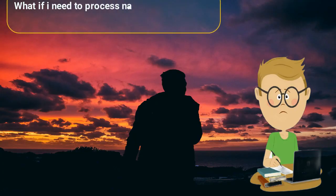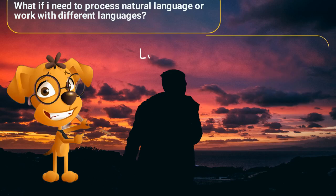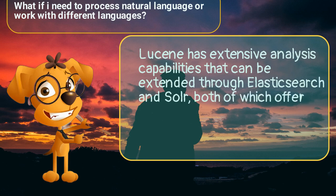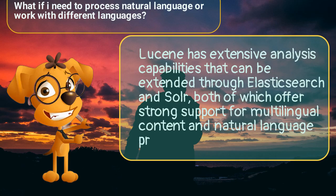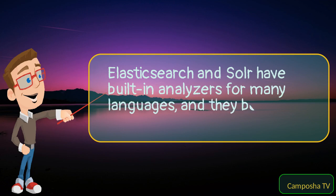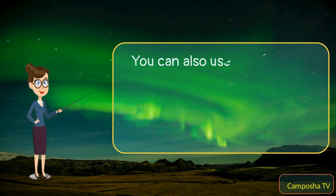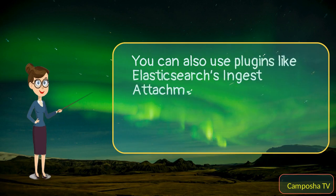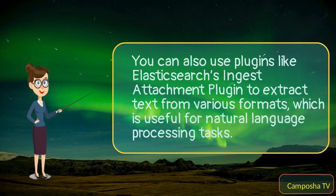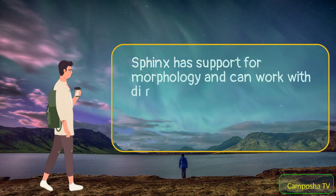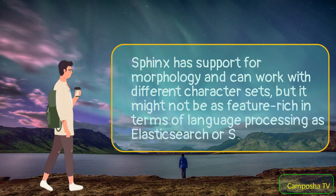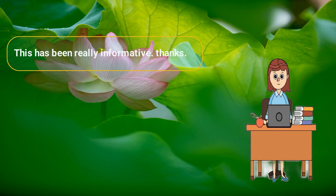What if I need to process natural language or work with different languages? Lucene has extensive analysis capabilities that can be extended to Elasticsearch and Solr, both of which offer strong support for multilingual content and natural language processing. Elasticsearch and Solr have built-in analyzers for many languages and support custom analyzers. You can also use plugins like Elasticsearch's Ingest Attachment plugin to extract text from various formats, which is useful for natural language processing tasks. Sphinx has support for morphology and can work with different character sets, but it might not be as feature-rich in terms of language processing as Elasticsearch or Solr. This has been really informative, thanks.